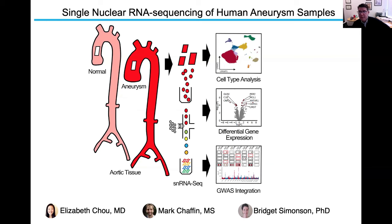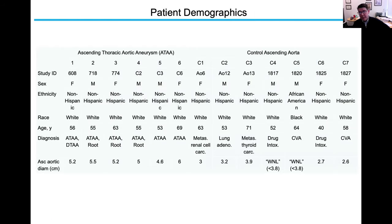This is the overview of our larger single-nuclear RNA sequencing experiment performed by Liz Chau from my lab and Mark Chafin and Bridget Simonson from the Broad Institute. This is the demographics of our patients — we had six ascending aortic samples and seven control samples after post-processing QC. These were all sporadic cases with ascending aortic diameters between 4.6 and 6 centimeters, whereas controls were in the twos and threes in centimeters. Mostly middle-aged patients. These were the samples after processing from which we were able to get informative nuclei and sequence.